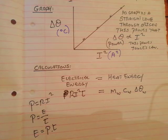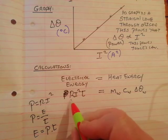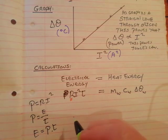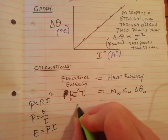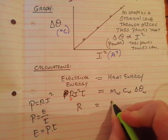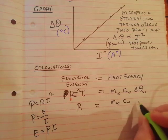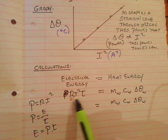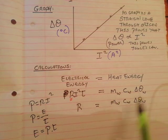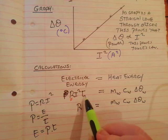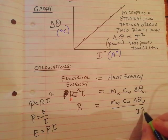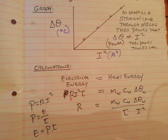Generally in this kind of question, they ask you to calculate the resistance of the heating coil. Rearranging gives: resistance equals mass of water × specific heat capacity of water × change in temperature, divided by current squared × time. In this question you're given the mass of the water, the specific heat capacity in joules per kilogram per degree, and the time the current flows in seconds.